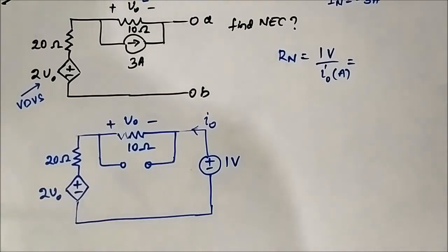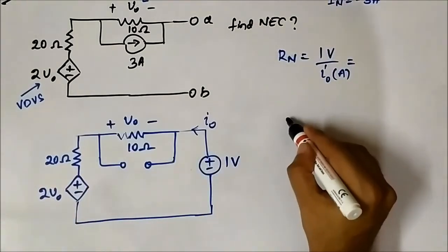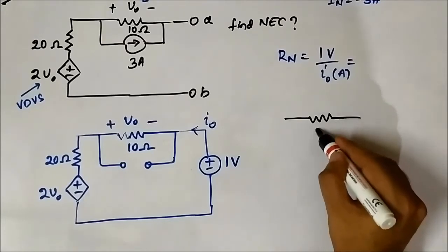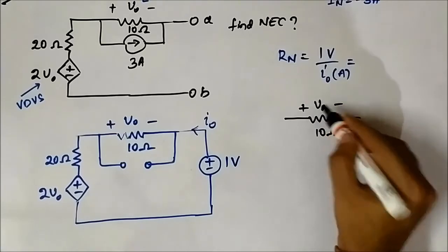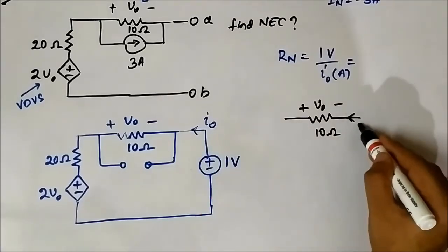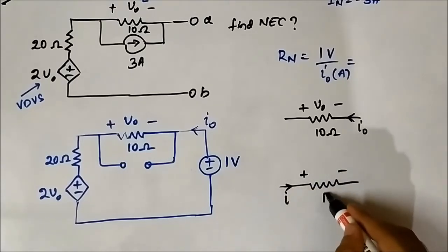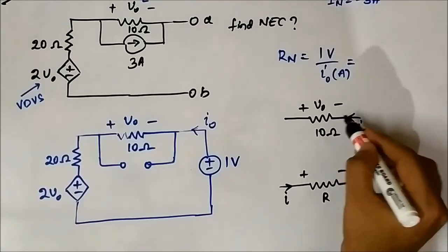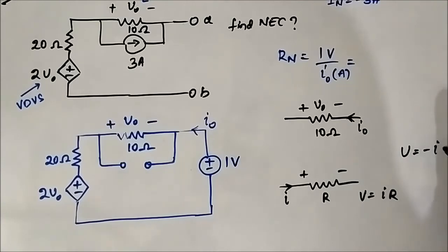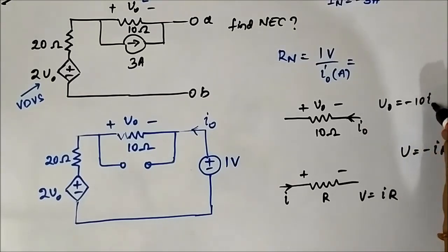We first establish an equation for the dependent variable V0. The polarity marked for the 10 ohm resistor and the assumed direction of I0 from the 1 volt source are opposite. Since current flows from positive to negative in a resistor and the voltage drop is given by IR, with I0 flowing in the opposite direction, V0 equals minus 10*I0. This is the important equation.